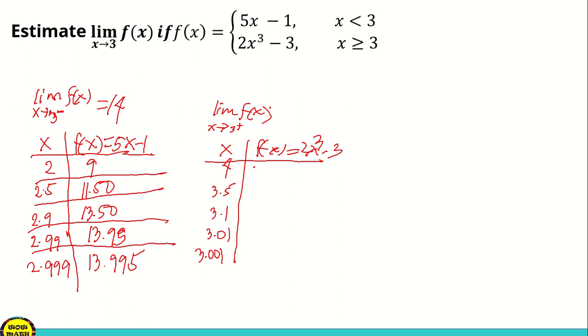We're going to substitute 4 dito sa x natin. So that will become 2 times 4 cubed minus 3. If we're going to compute using your calculator or if you're going to compute manually, that is 29. And if x is 3.5, f of x is 21.50.